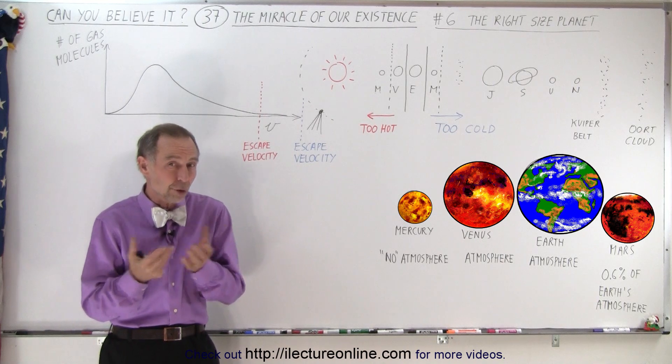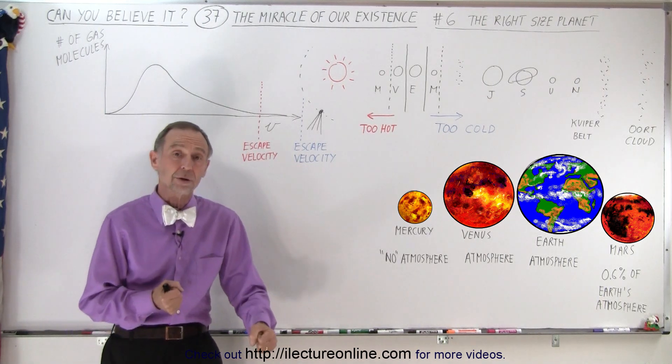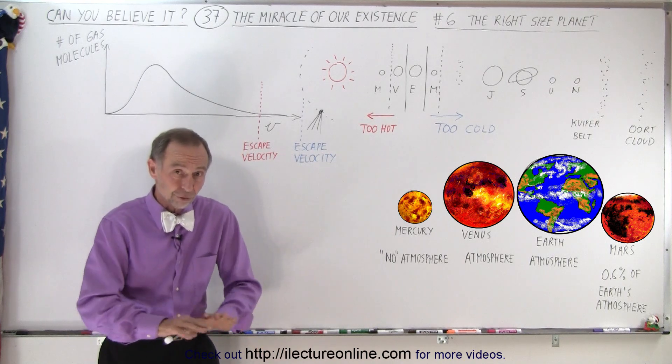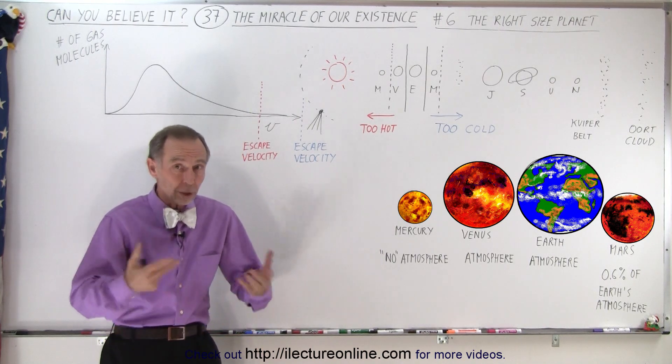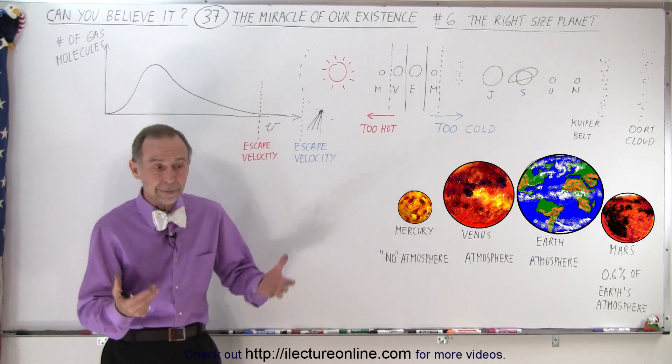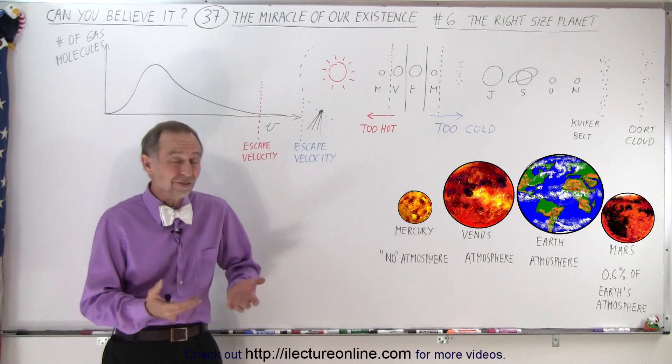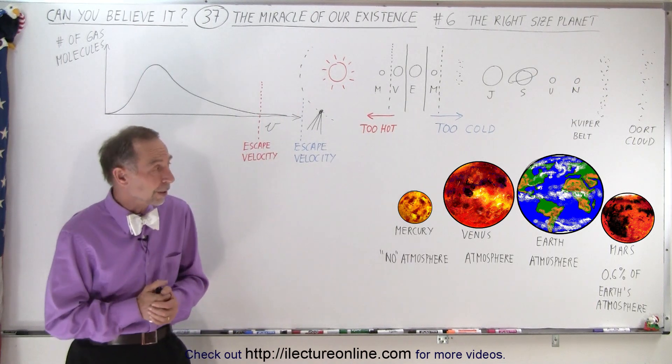On Mars, where there's virtually no atmospheric pressure left, if you were to take a bucket of water and start pouring it on the surface, even though the temperatures are very cold on Mars, the water would immediately begin to boil as it's trying to freeze at the same time because of the very low temperatures. The boiling temperature is near zero degrees Celsius on Mars.